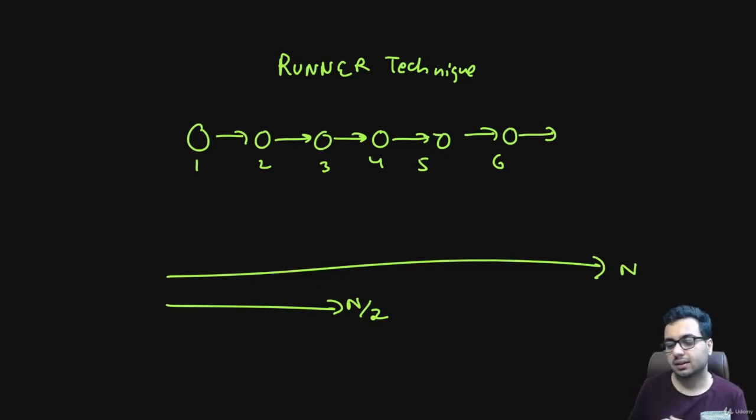But let's say what we can do - we can actually take two runners. Let's say there is a fast runner, there is a slow runner. Treat it like a race in which two horses are running together.